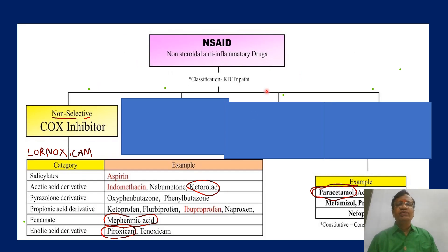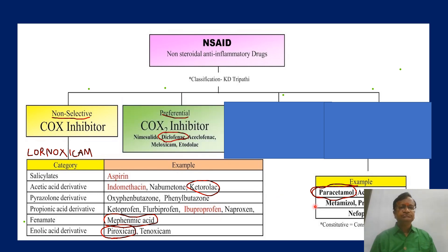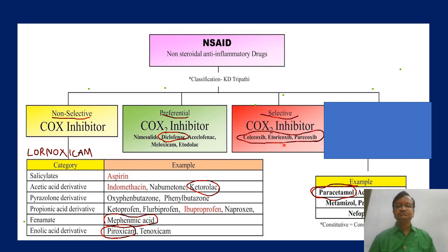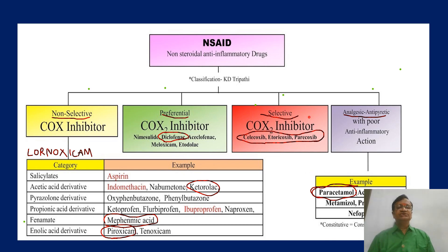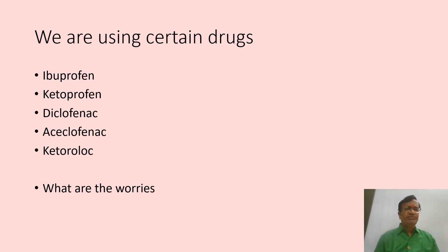The PATH-IS classification: non-selective COX inhibitors include lornoxicam, salicylates, ketorolac, mefenamic acid, piroxicam, ibuprofen, and naproxen. Preferential COX-2 inhibitors include diclofenac, aceclofenac, and meloxicam. The COXIBs — celecoxib, etoricoxib, parecoxib — are selective; they reduce pain but lack significant anti-inflammatory action at standard doses. We commonly use ibuprofen, ketoprofen, diclofenac, and aceclofenac.